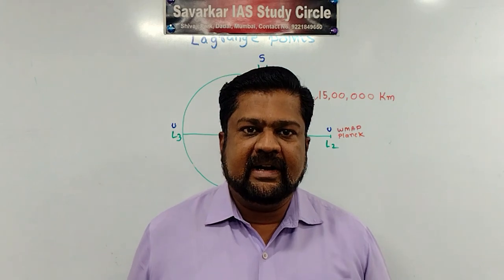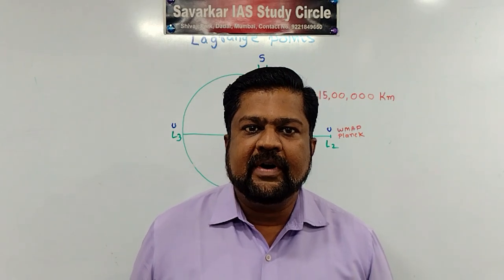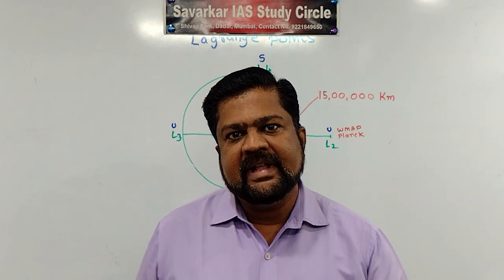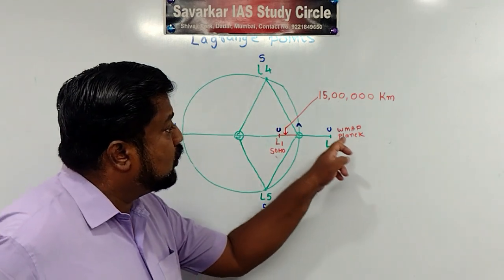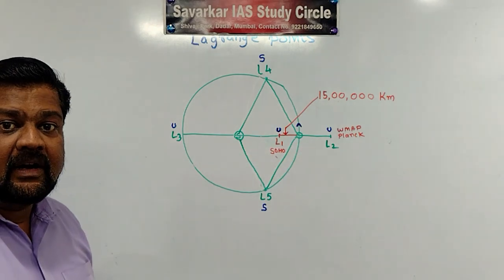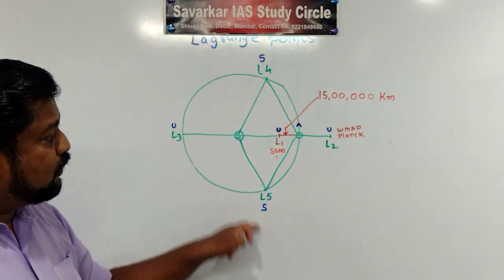Now out of this 5 Lagrange points, 3 Lagrange points are unstable. Whereas 2 points are stable. So here it is shown by mark U. So L1, L2 and L3 they are unstable. Whereas L4 and L5 they are stable.